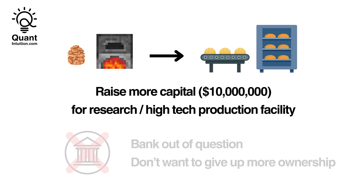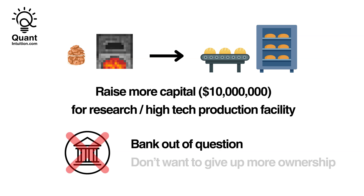Imagine our cookie business is looking to expand and needs to borrow 10 million dollars for a new fleet of manufacturing facilities around the world. Approaching banks for this loan represents a high counterparty risk that they're not willing to take. Thus, we're very unlikely to find one bank or a group of banks that are willing to have 10 million dollars of exposure towards us and our cookie business.